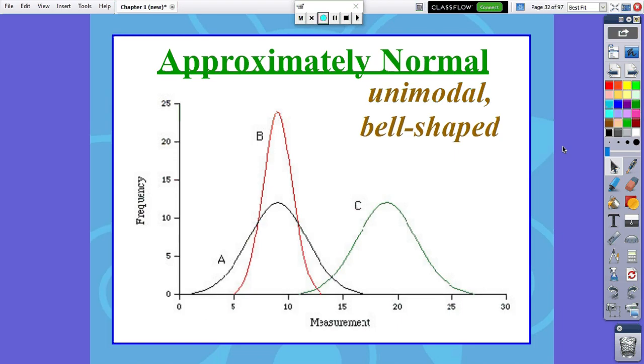One of the most common shapes we will see throughout the year is what's called approximately normal. It's your bell-shaped curve that you might have heard about. It's technically unimodal, which means it has one hump. Mode is the most frequent number, and the peak represents the most common value.